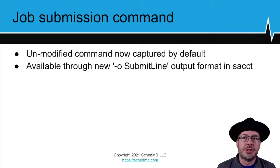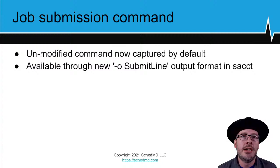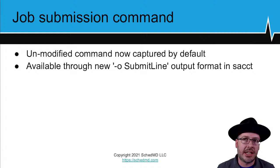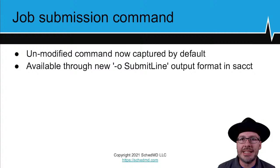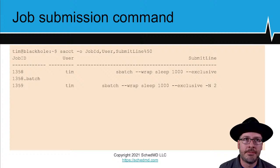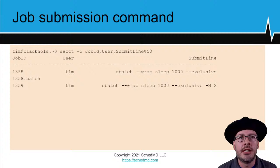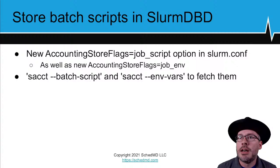On to an overview of the 2108 release itself. One common request has been for the accounting subsystem to capture the exact raw unmodified job submission command that the user ran. We did that — it's now captured by default in the database. You can access this with the dash-o submit-line flag to the sacct format to fetch it back out. As an example, you can request from sacct the job ID, user, and submit line, truncated to 50 characters.